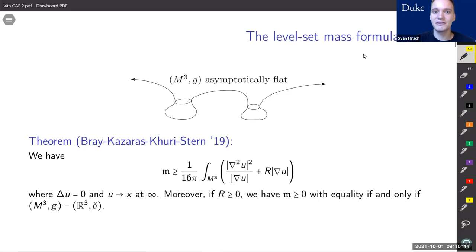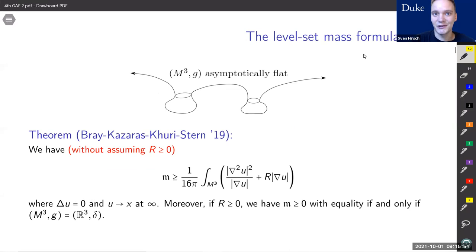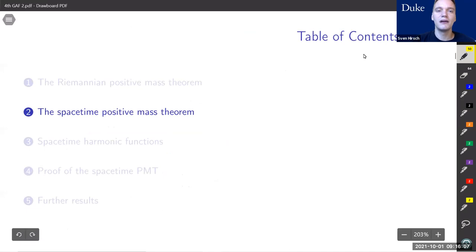They also obtain a case of equality: if you have non-negative scalar curvature, then the mass is equal to zero if and only if the manifold is flat. One important thing to highlight is that this formula is true without assuming non-negative scalar curvature, which makes it very different from the spinor formula for mass. For spinors you have a very similar-looking formula, however to get existence of these spinors you crucially need to assume non-negative scalar curvature.